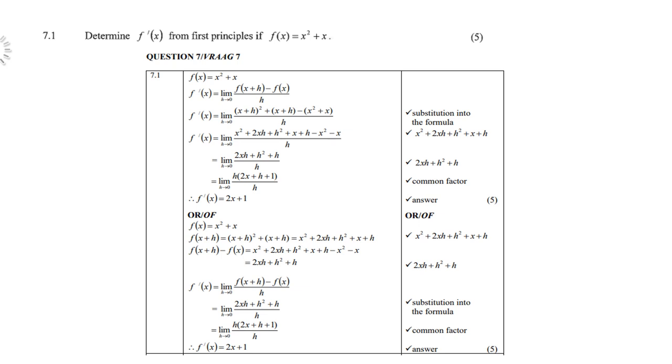Then you take out h as a common factor, because we would like to cancel the h in the denominator. Remember, division by 0 is not allowed. So h will cancel, and we're left with the limit as h approaches 0 of 2x + h + 1. The derivative is 2x + 1. Of course, you can use other methods. There are different ways of doing this.